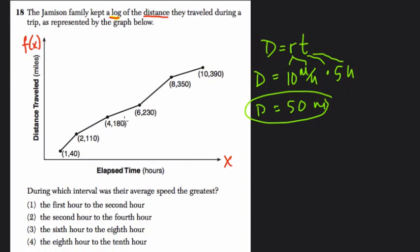So what does that mean here if we're looking at the greatest speed? Look at D = rt. If you want to isolate r, which is our speed, I would divide both sides by t. That means rate or speed equals distance divided by time.